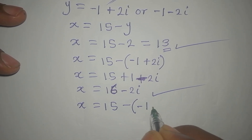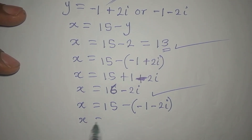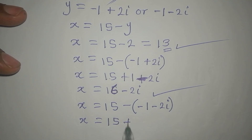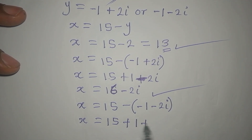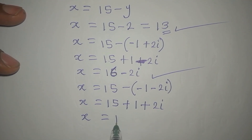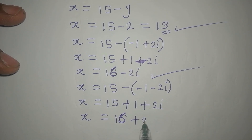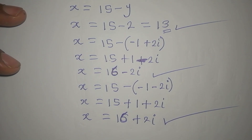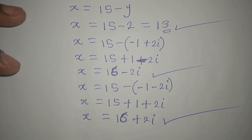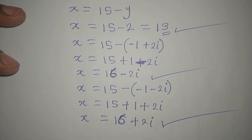For Y equals negative 1 minus 2i, X equals 15 minus (negative 1 minus 2i), which becomes 15 plus 1 plus 2i, so X equals 16 plus 2i. These are the three solutions to the equation, but remember that only the first solution, X equals 13, is the real solution.